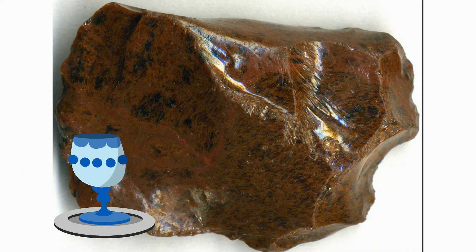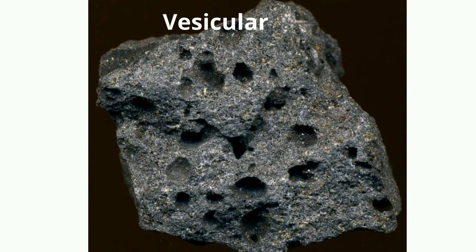A Vesicular igneous rock is a rock with bubbles, and these can be mafic or felsic.